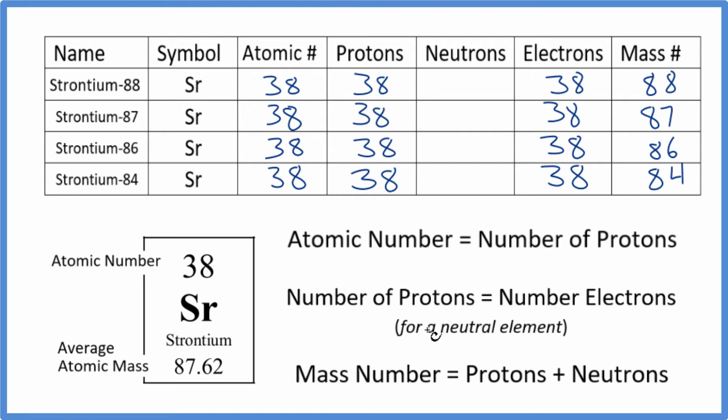To find the neutrons, we know the mass number is equal to protons plus neutrons. So we have 38 protons, 38 plus 50, that gives us the 88. So we know we have 50 neutrons.